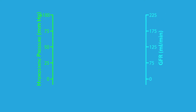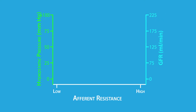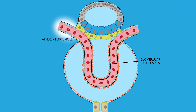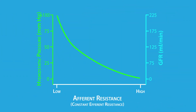Let's now see what happens to glomerular capillary hydrostatic pressure and GFR when afferent resistance is changed while efferent resistance is kept constant. A typical afferent arteriolar resistance corresponds to a hydrostatic pressure of about 50 mmHg. As afferent resistance is decreased, hydrostatic pressure increases, and as afferent resistance is increased, hydrostatic pressure decreases. This makes sense because the afferent arteriole is upstream of the glomerular capillary, and GFR follows the changes in hydrostatic pressure.